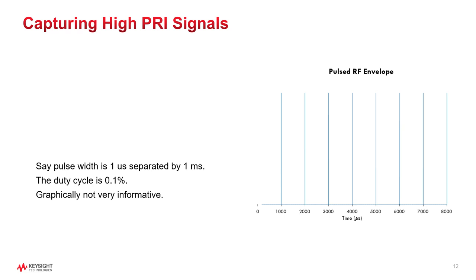Sometimes the duty cycle can be very small for these pulses. In this example, we created a pulse train where the pulse width is one microsecond, but each of the pulses is separated by 1,000 microseconds, or one millisecond. Graphically, this is not very informative. For example, can you see the overshoot of the pulse? You cannot see that from this picture. So we would like a way to isolate the measurement acquisition to just the active part of the pulse and throw away all the dead time.